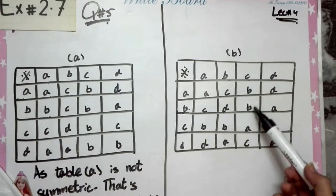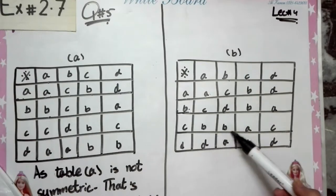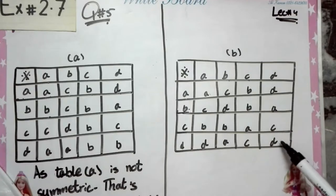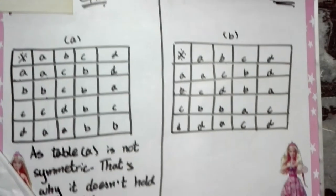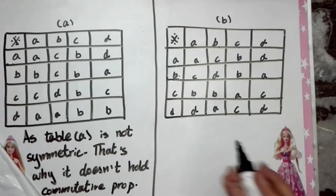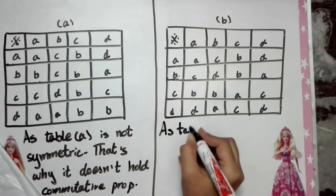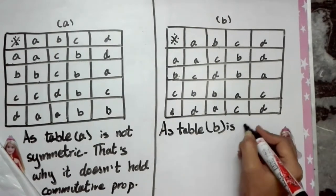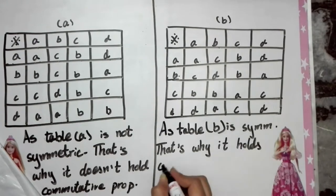Fourth row is C, B, B, A, C and the corresponding column also matches. Last row is D, D, A, C, D and the last column is also D, D, A, C, D — they match. This means table B is symmetric, so table B holds the commutative property.